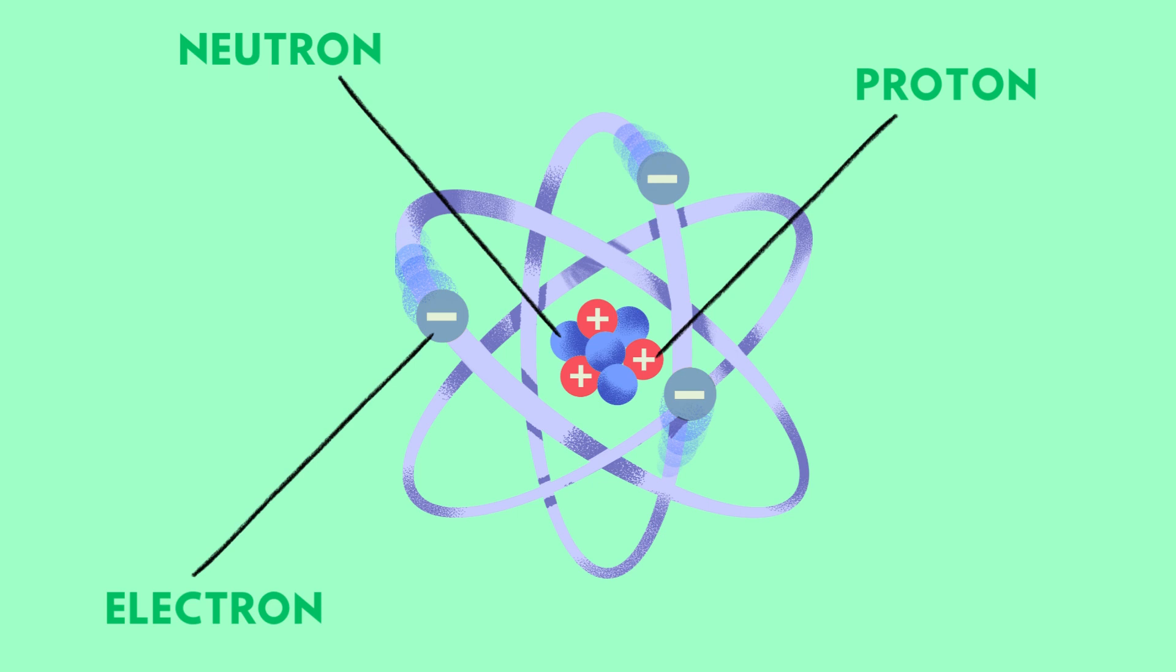The second, much larger region of the atom is a cloud of electrons. Electrons carry a negative charge and they orbit around the nucleus in fixed shells. Protons, neutrons, and electrons are called subatomic particles.